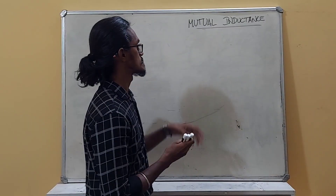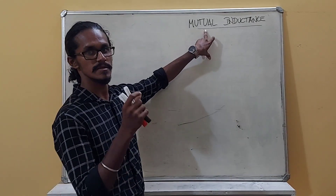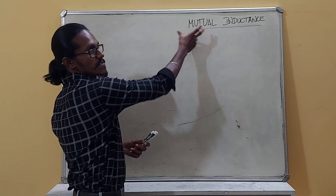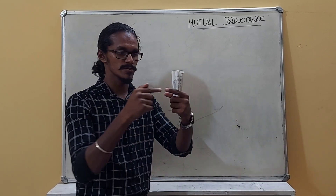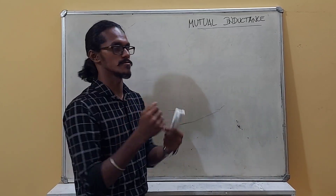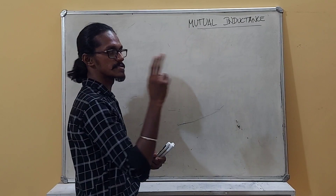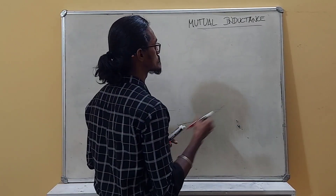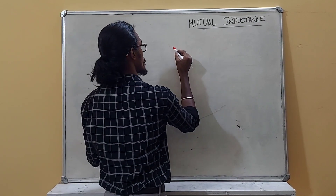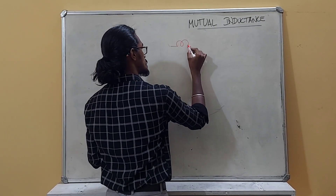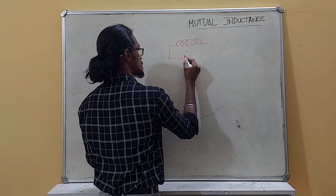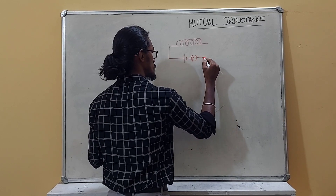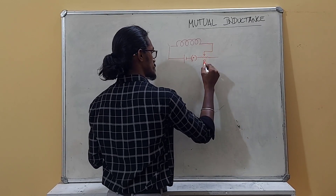The previous topic was self-inductance, where a solenoid induces itself. The next topic is mutual inductance — when a first solenoid induces a second solenoid. For this, we consider two solenoids: a primary solenoid connected to a battery, key, and rheostat.